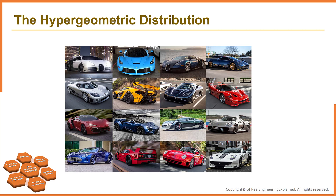Suppose there are 16 cars available for you to test drive. The car dealer has already told you five out of these 16 cars have turbo engines. If you test drive three of the cars, what is the probability that two of the three cars that you test drive will have turbo engines? This is a typical example for hypergeometric distribution that we would like to answer here.